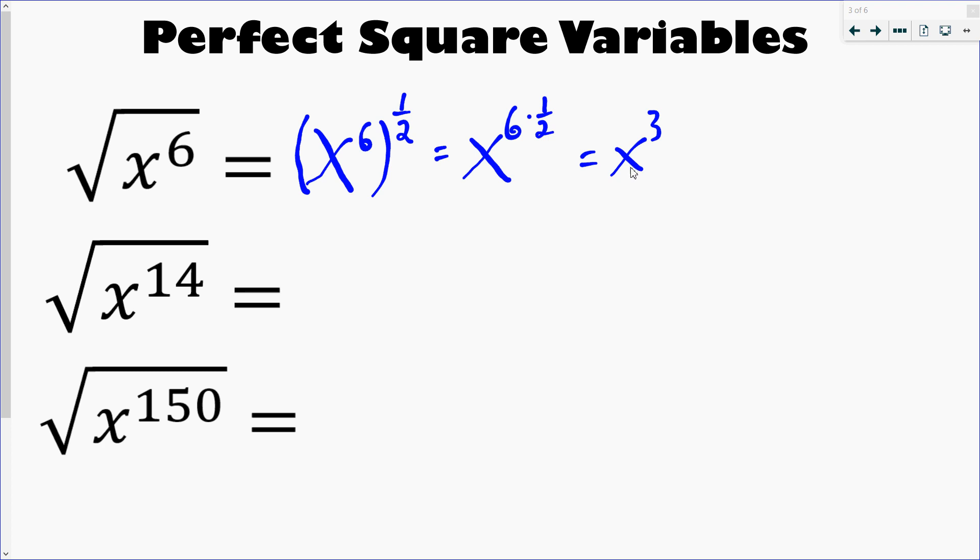Now I want you guys to try to make the connection. What would make something a perfect square variable? Let's try x to the 14, so we would think about it's x to the 14 all to the half, and then you'd multiply these two together, so it'd be x to the 14 times 1 over 2, and then of course you get x to the 7.